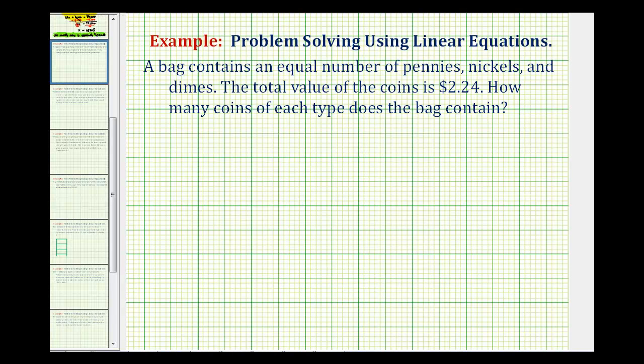A bag contains an equal number of pennies, nickels, and dimes. The total value of the coins is two dollars and twenty-four cents. How many coins of each type does the bag contain?